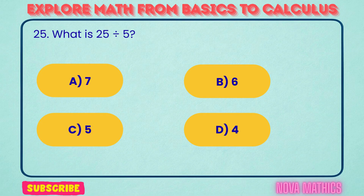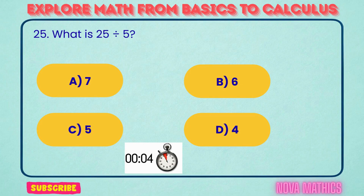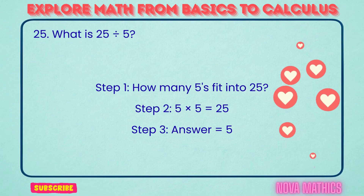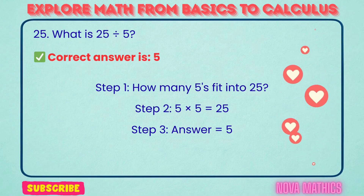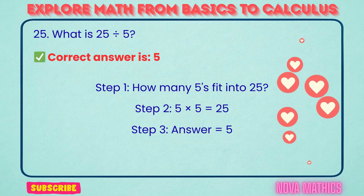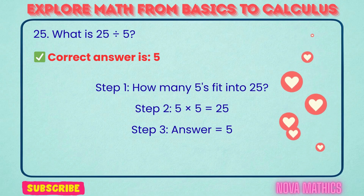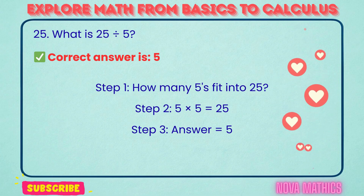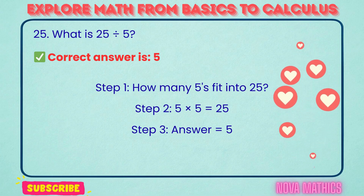25. What is 25 divided by 5? Correct answer is 5. 25 divided by 5 equals 5. We find this because 5 times 5 is 25.